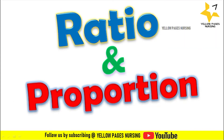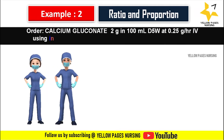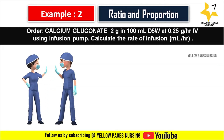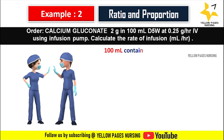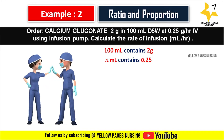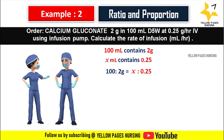Next, using the ratio and proportion method, let's discuss the same example. Doctor's order: calcium gluconate 2 gram in 100 ml D5 water at 0.25 gram per hour IV using infusion pump. Calculate the rate of infusion, that is ml per hour. Here, 100 ml contains 2 gram, so X ml contains 0.25 gram.